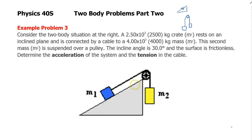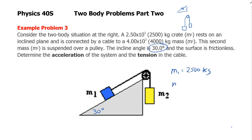We've got an inclined plane and the angle here is 30 degrees, and mass number one is on there. A string is tied to it, there's a pulley, and then that's attached to the hanging mass. Mass number one is 2,500 kilograms, mass number two is 4,000 kilograms, and it says it is frictionless, so mu equals zero.